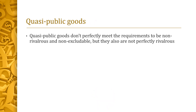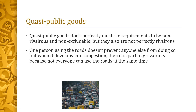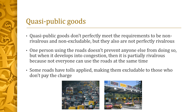Quasi-public goods don't perfectly meet the requirements to be non-rivalrous and non-excludable, but they are also not perfectly rivalrous and excludable. If we look at the roads as an example, one person using the roads doesn't prevent anyone else from doing so, so on the surface it seems like a public good. But when it develops into congestion, then it is partially rivalrous, because not everyone can use the roads at the same time. Roads can also have tolls applied, which makes them excludable to those that don't pay the charge. In areas with high traffic flow and a need for a faster road, it might be possible for these to be done with private or a combined government-private enterprise collecting tolls. But this wouldn't be suitable for smaller country roads and roads within housing estates, where there wouldn't be enough people using them to make them financially viable.